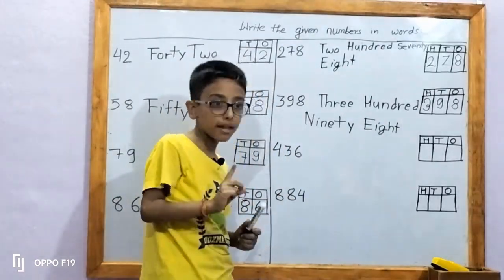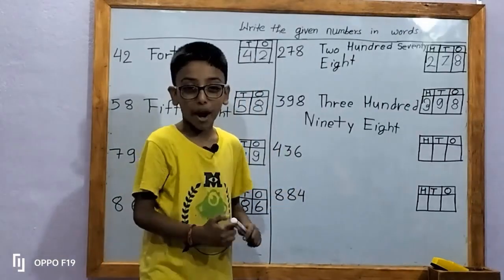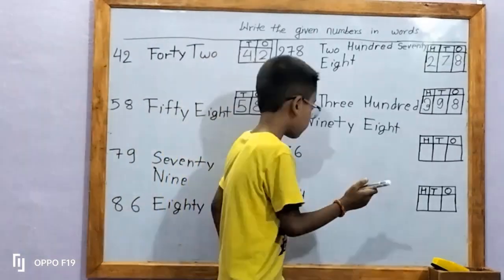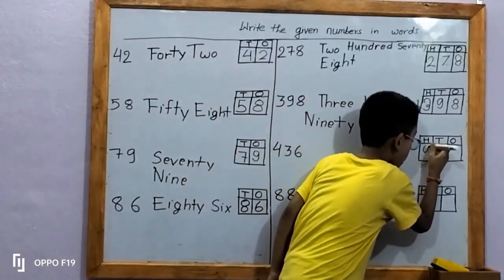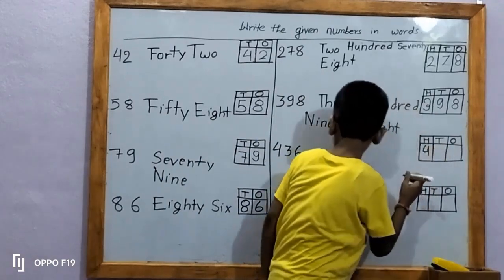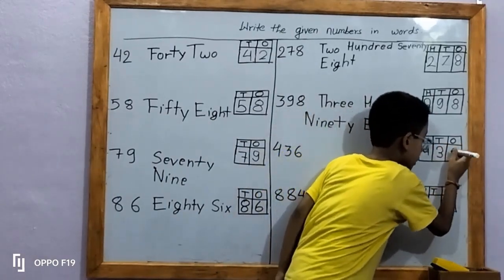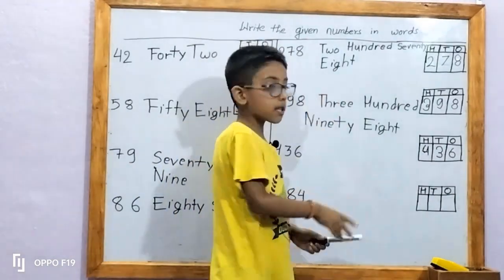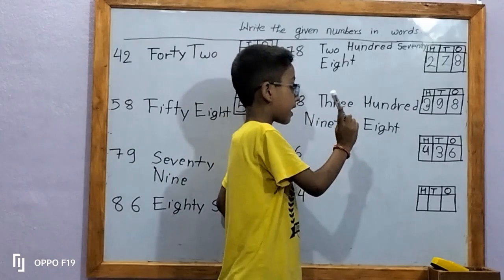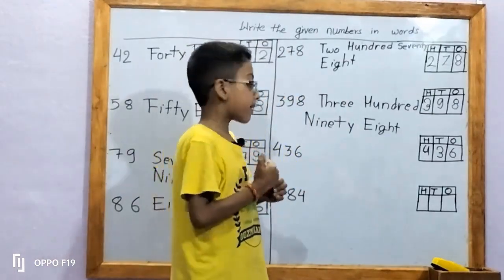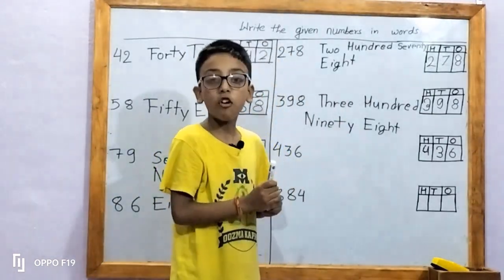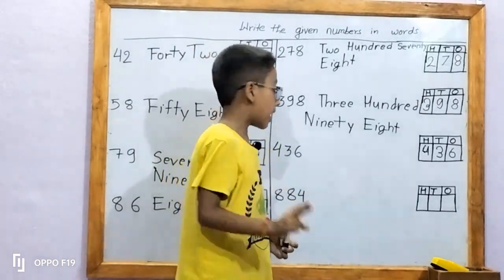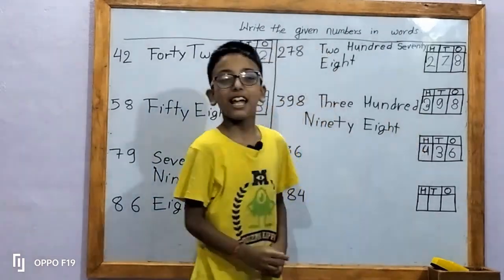The next number there is given 4, 3, 6 — that is 436. Let's write in place: 4, 3, 6. Six is in one's place; six ones means 6. Three is in ten's place; three tens means 30. Four is in hundred's place; four hundreds means 400. It makes the number 436.